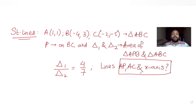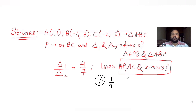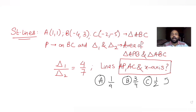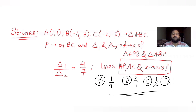We have been asked to find the area enclosed by lines AP, AC, and the x-axis. The options given to us are: 1/4, 3/4, 1/2, and 1. We need to figure out which one of the four options is the correct answer.